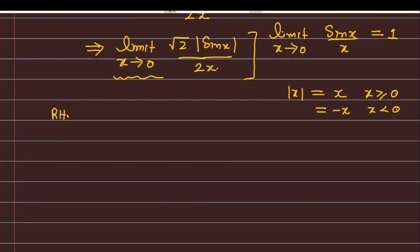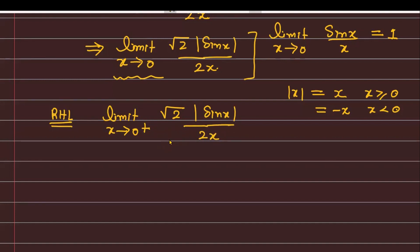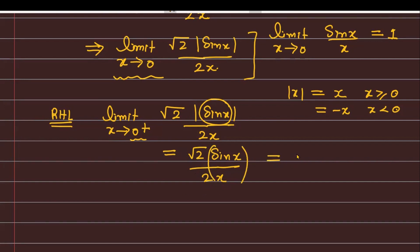तो चलिए सबसे पहले right hand limit calculate करते हैं। Right hand limit का मतलब है x tending to 0+, अर्थात् 0 के right side में। अगर x > 0 है और 0 के closer है, तो sin x positive quantity generate करेगा — means mod directly remove कर सकते हैं। यह बनेगा root 2 · sin x divided by 2x. चूँकि sin x/x → 1 as x→0, right hand limit = 1/√2.